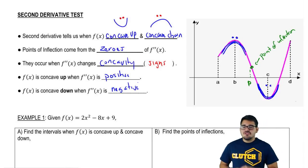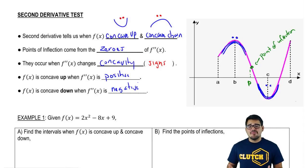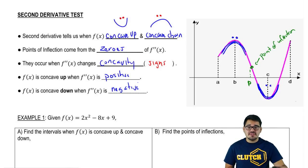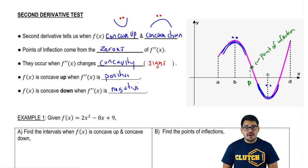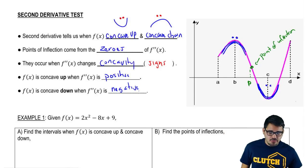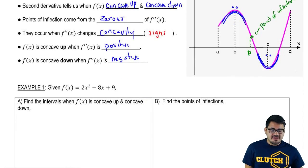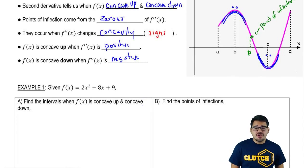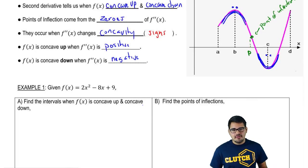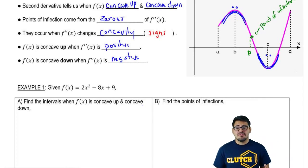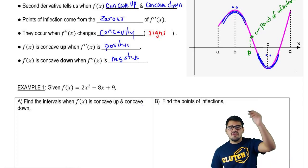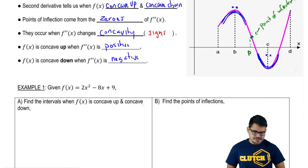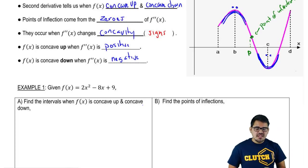Let's jump straight into an example. In Example 1, f(x) = 2x² - 8x + 9. This is a quadratic function, or a parabola. Parabolas are actually one of the best examples of concavity for polynomials because they're very smooth curves with clear turning points. Let's look at part A: find the intervals where f(x) is concave up or concave down.